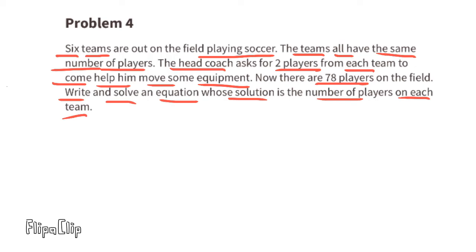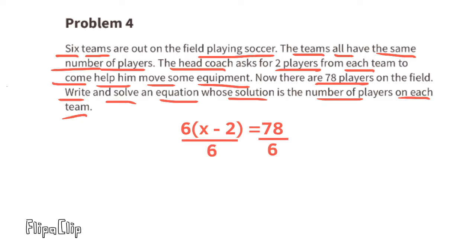Problem number four: six teams are playing soccer, all with the same number of players. The coach asked for 2 players from each team to help move equipment, leaving 78 players on the field. The equation is 6 times (x minus 2) equals 78, where x is the number of players per team, minus 2 represents the 2 players leaving each team, and 78 is the remaining players. Dividing both sides by 6 gives x minus 2 equals 13, and adding 2 gives x equals 15. Each team has 15 players.